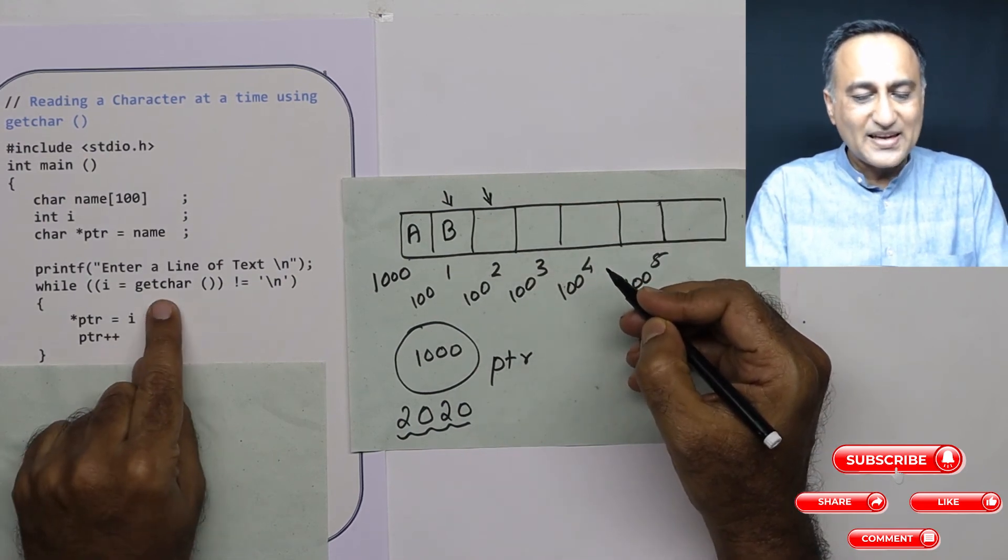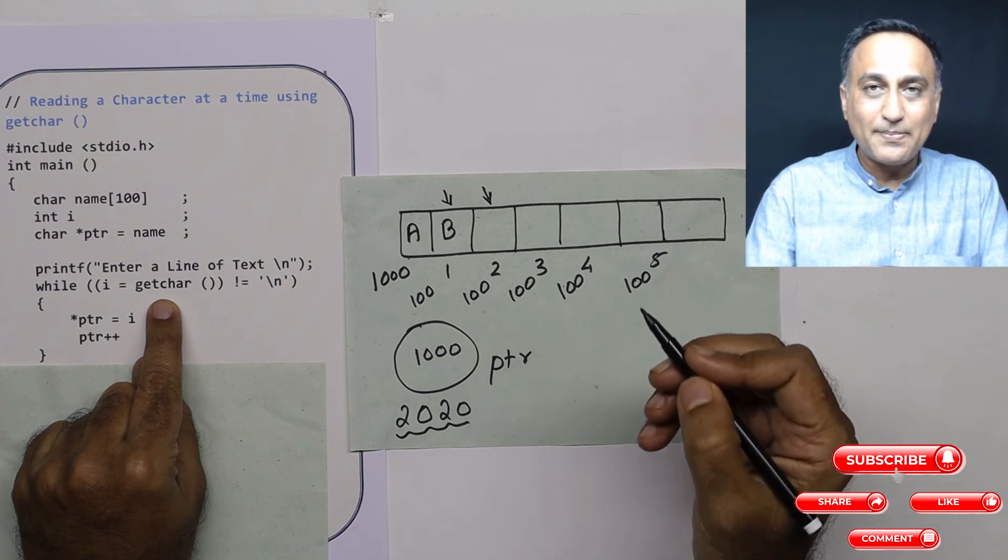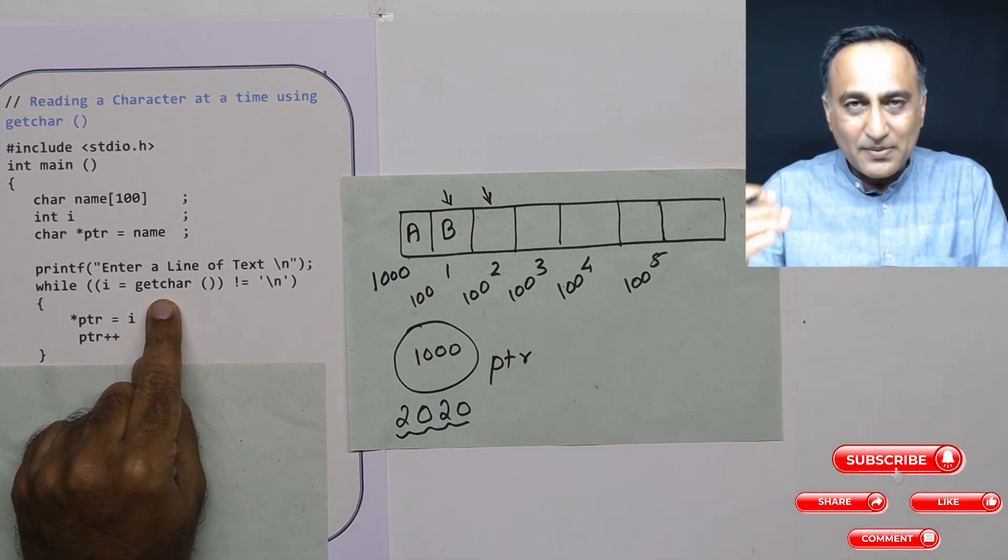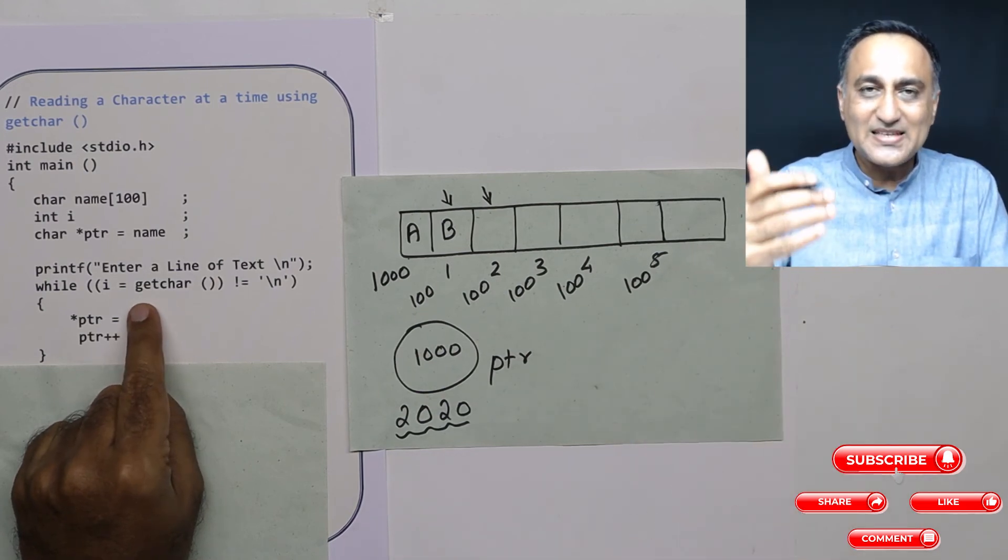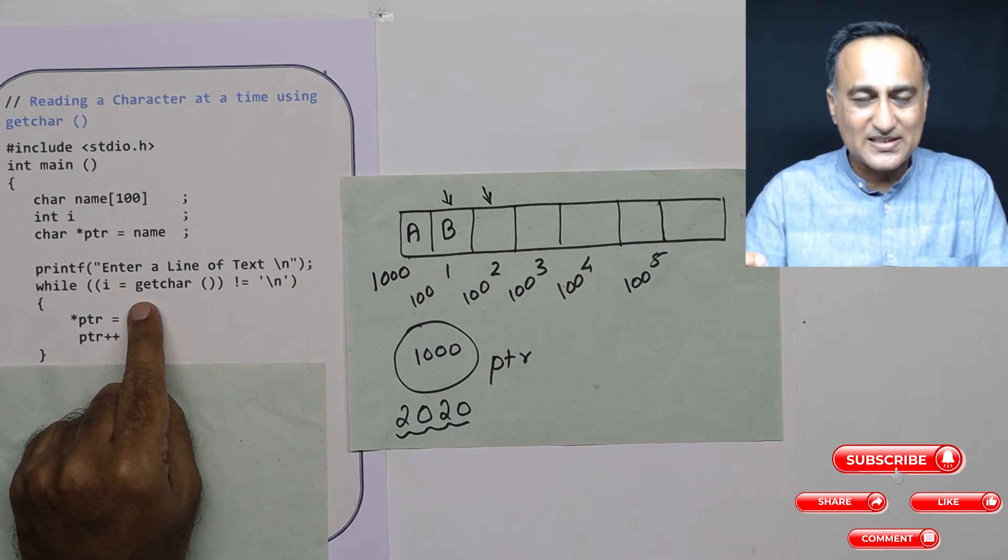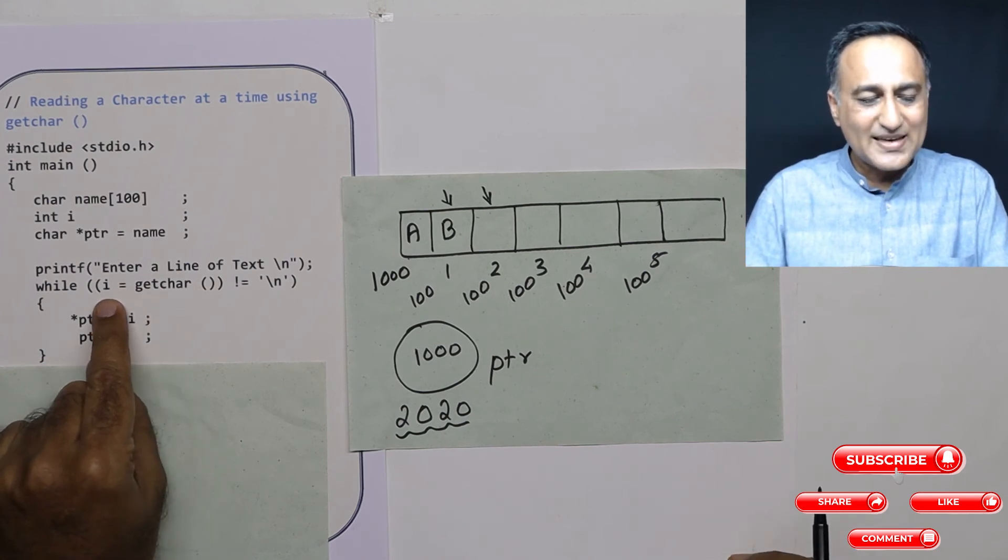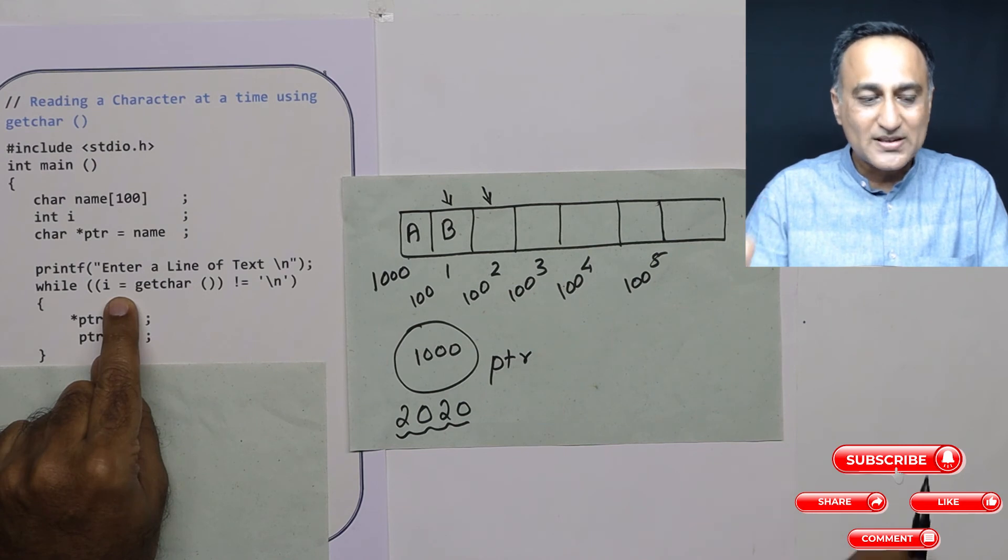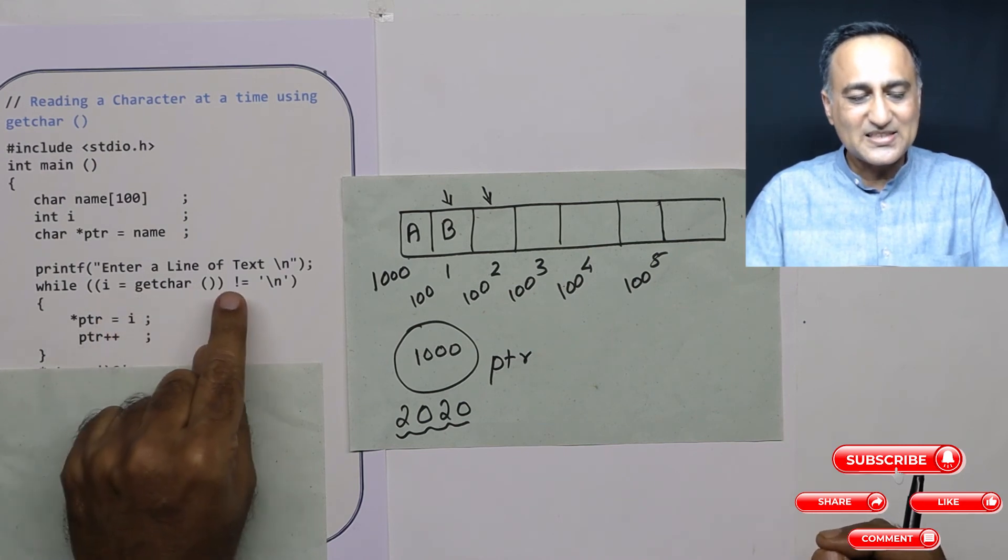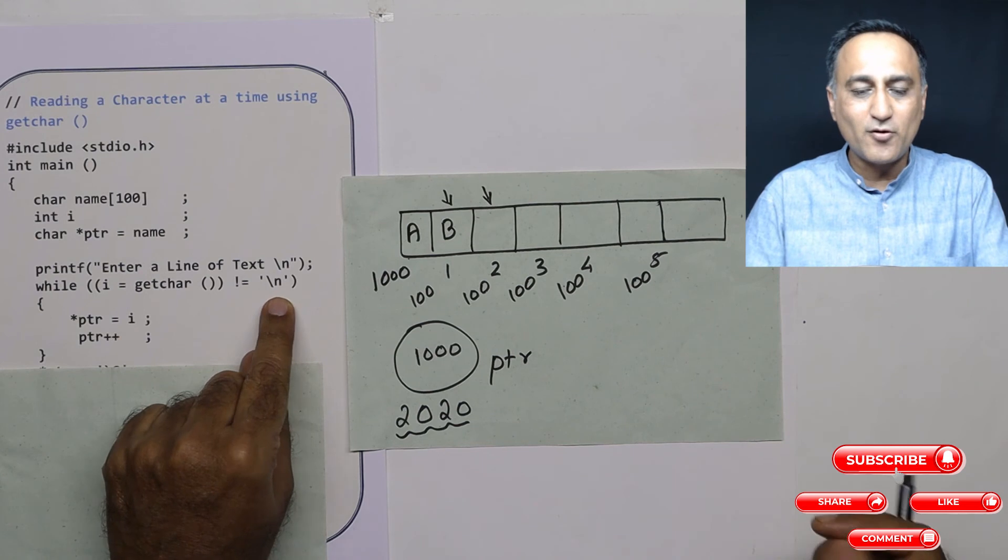Now I am reading the next character. Let's say the next character is capital C. When I am reading C, the ASCII value of capital C is 67. I is 67. The assignment operator returns the value 67, which is definitely not equal to the ASCII value of newline.